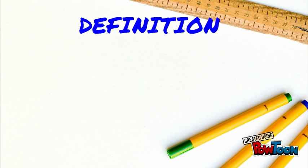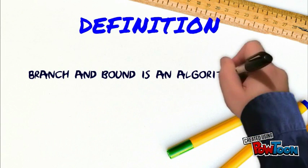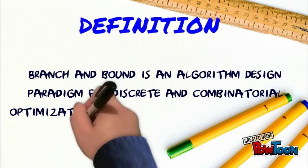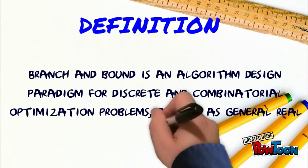Definition: Branch and Bound is an algorithm design paradigm for discrete and combinatorial optimization problems, as well as general real-valued problems.